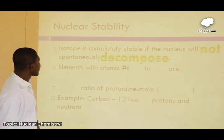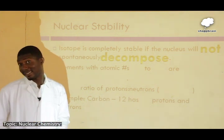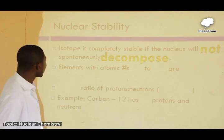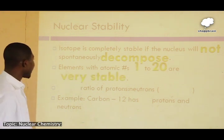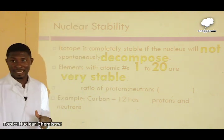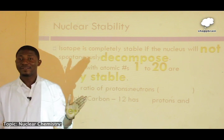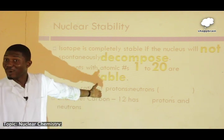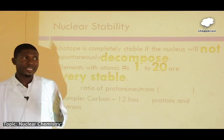This topic is about the stability of nuclides. An isotope is completely stable if the nucleus will not spontaneously decompose. Elements with atomic numbers 1 to 20, from hydrogen to calcium, are relatively stable. If they are stable, they do not undergo radioactivity, because stable nuclides will not undergo radioactivity to achieve stability.